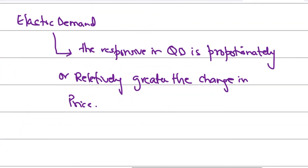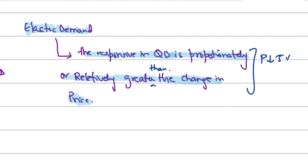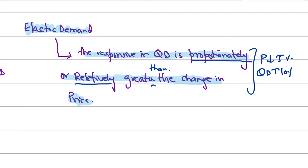What is elastic demand telling you? It is telling you that the response in quantity demanded is proportionately or relatively greater than the change in price — because if you reduce price by 5%, quantity demanded rose by 10%. The key word is 'relatively' or 'proportionately'. You should say the response in quantity demanded was proportionately greater than the change in price, because you are talking in comparative terms.